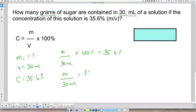30 mL at the bottom, and you're going to take this percentage and bring it over here to the other side of the equation. So you get 35.6% over 100%. And by doing this, it becomes simpler to solve.